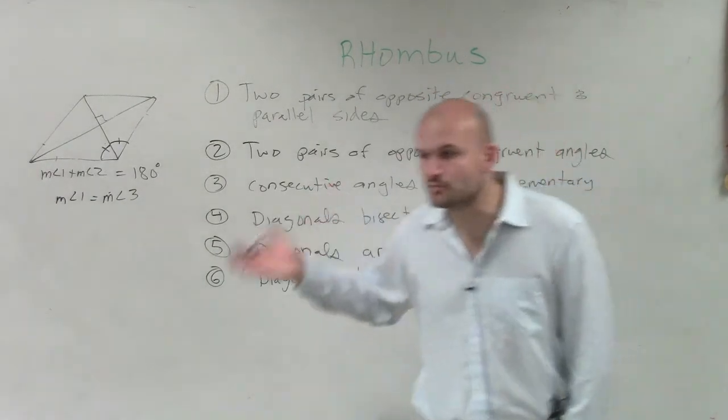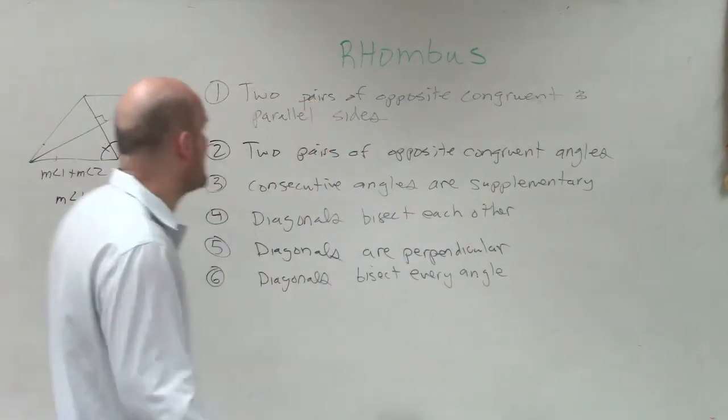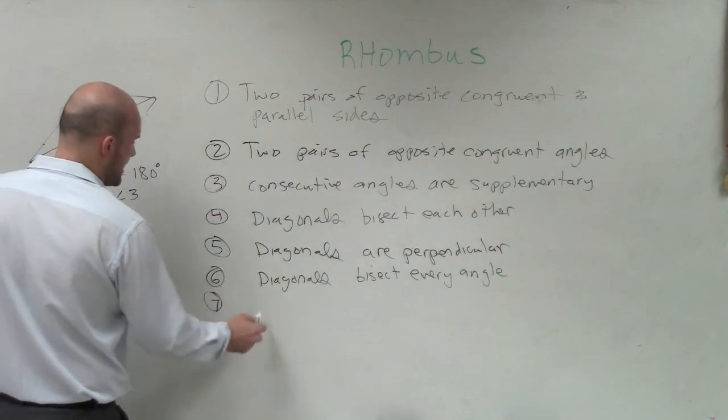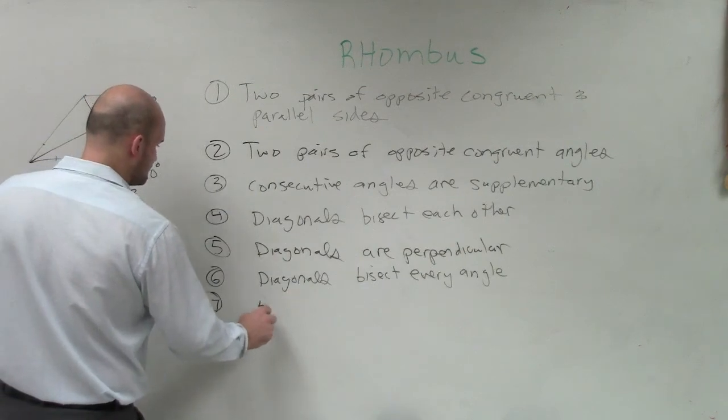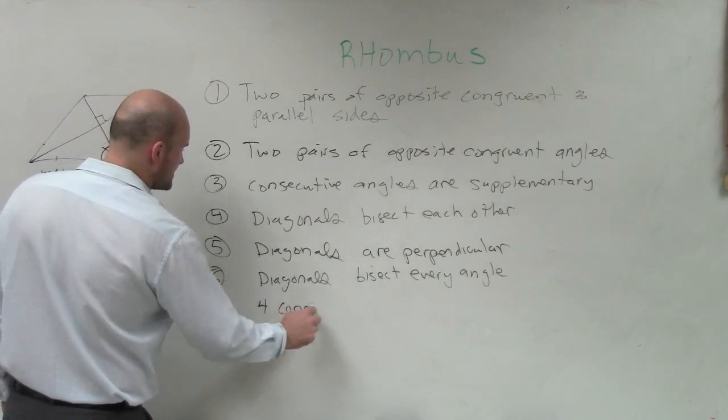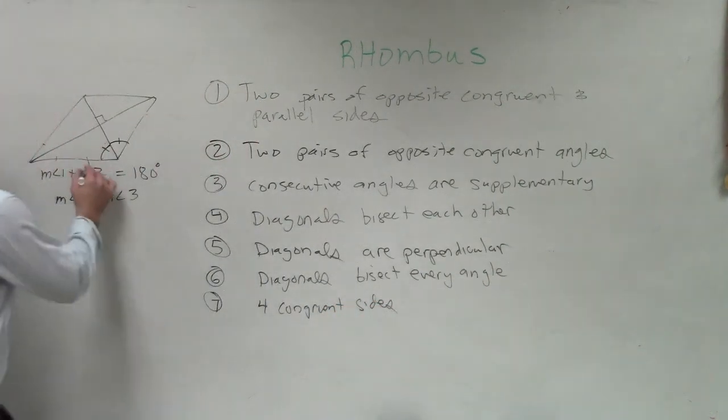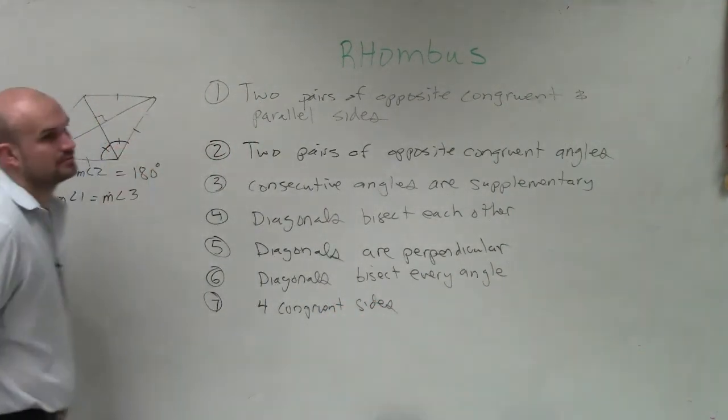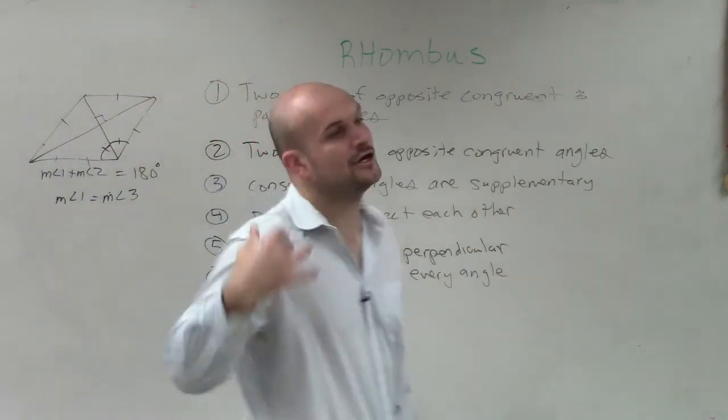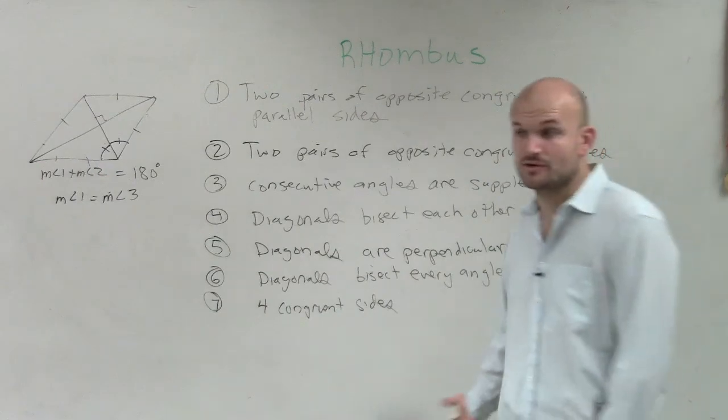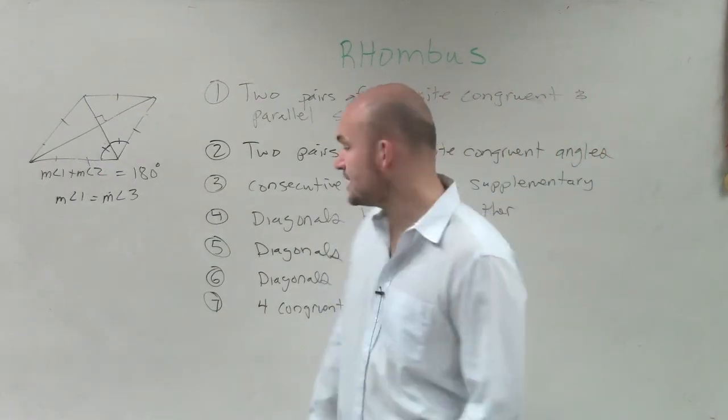Another thing that's also true for rhombuses, which let's get into the last one, is also they have four congruent sides. All the sides are equal to measurement. So if I know the measurement of one side, I know the measurement of all the sides. That's true for rhombuses. That's not true for parallelograms.